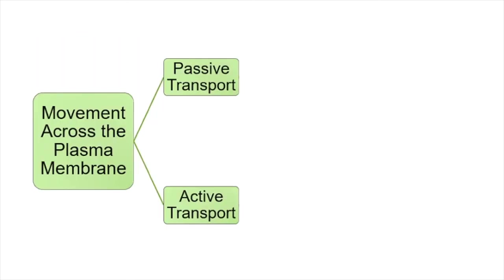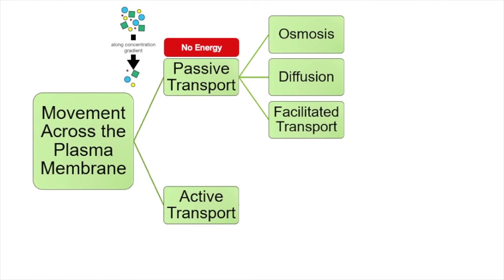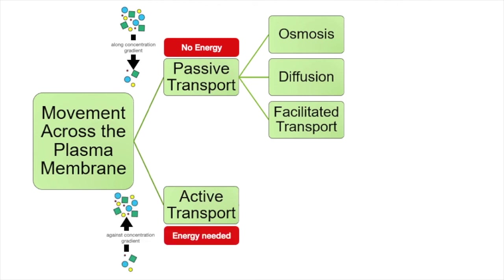And so that's it for passive transport. To summarize, movement across membranes can happen via passive or active transport. Passive transport does not require extra energy from the cell since it involves movement of particles along their concentration gradient, from high to low concentration. Osmosis, simple diffusion, and facilitated diffusion are all examples of passive transport. Active transport, on the other hand, does require energy from the cell since it involves movement against the concentration gradient, from low to high concentration. Our next lesson will explore active transport in more detail.